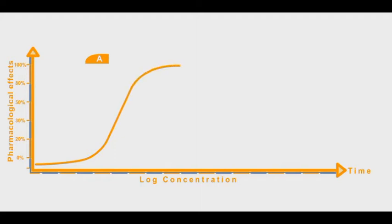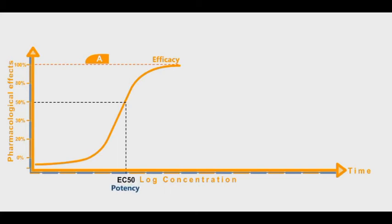The maximal pharmacological effect produced by a given drug is called maximal efficacy and is usually represented as 100% effect. The drug concentration that elicits 50% of the maximal pharmacological effect is called EC50. EC50 is an important marker used to compare drug potencies.